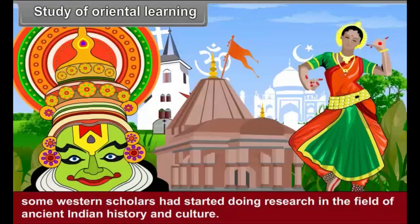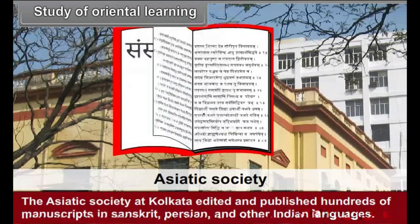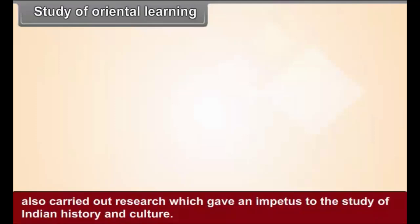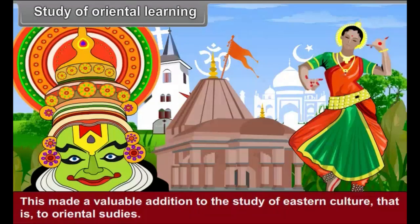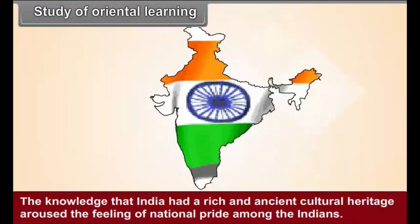In the latter half of the 18th century, some Western scholars had started doing research in the field of ancient Indian history and culture. The Asiatic Society at Kolkata edited and published hundreds of manuscripts in Sanskrit, Persian, and other Indian languages. Indian scholars like Dr. Bhau Daji Lad and Dr. R. G. Bhandarkar also carried out research which gave an impetus to the study of Indian history and culture. This made a valuable addition to Oriental studies, and the knowledge that India had a rich and ancient cultural heritage aroused the feeling of national pride among the Indians.